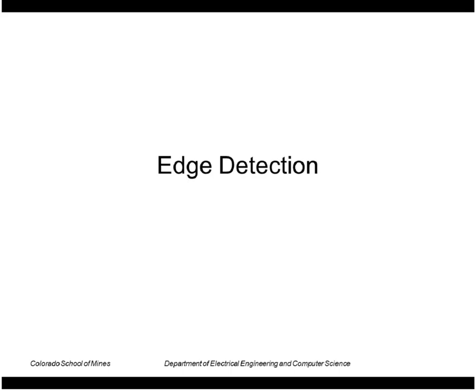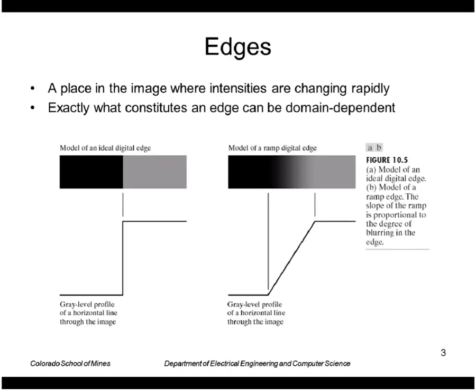Today I'm going to talk about edge detection. Edges are a place in an image where intensities are changing rapidly. Exactly what constitutes an edge can be domain dependent.